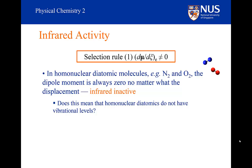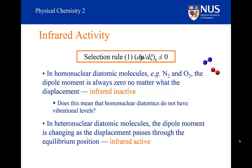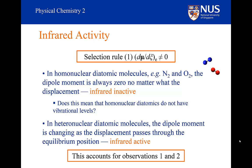For heteronuclear diatomics, the dipole moment is changing during the vibration. The dipole moment is just the charge times distance, and as the bond length changes, the dipole moment changes. For that reason, heteronuclear molecules do have infrared spectra and are known as infrared active molecules. This essentially accounts for our observation that carbon monoxide dissolved in a solvent has a vibrational band in the infrared, and so we have explained the first two observations we made with regard to vibrational spectroscopy.